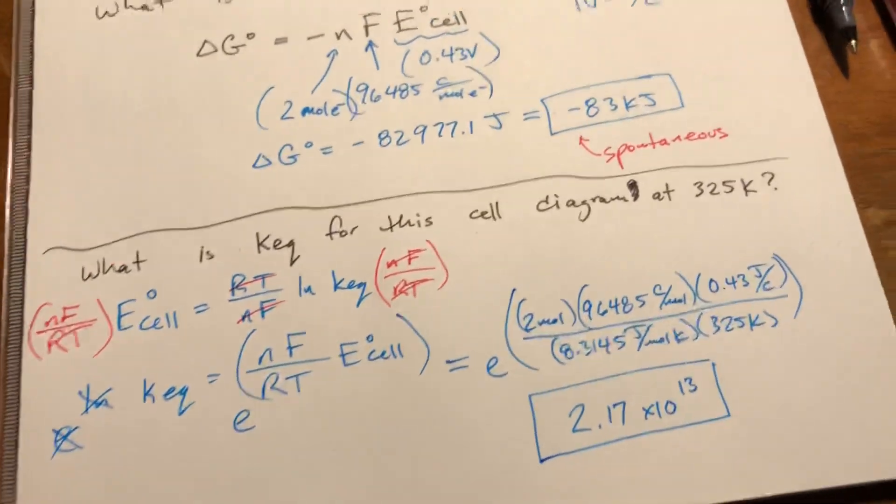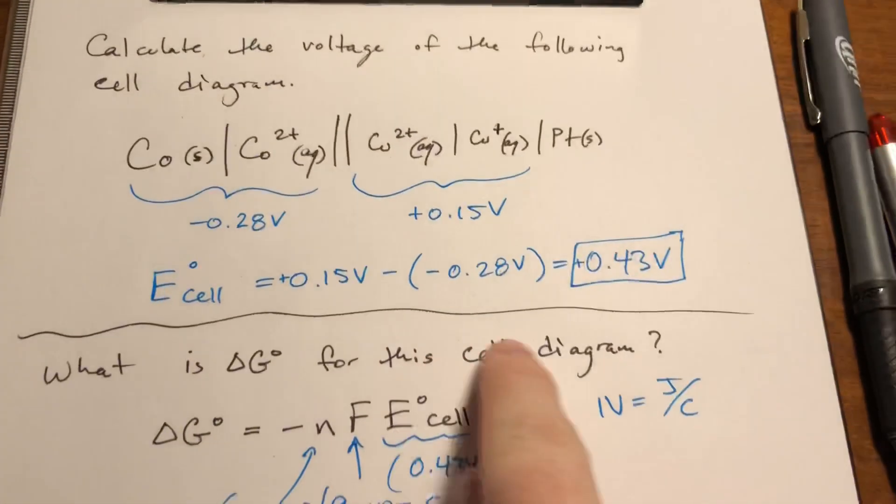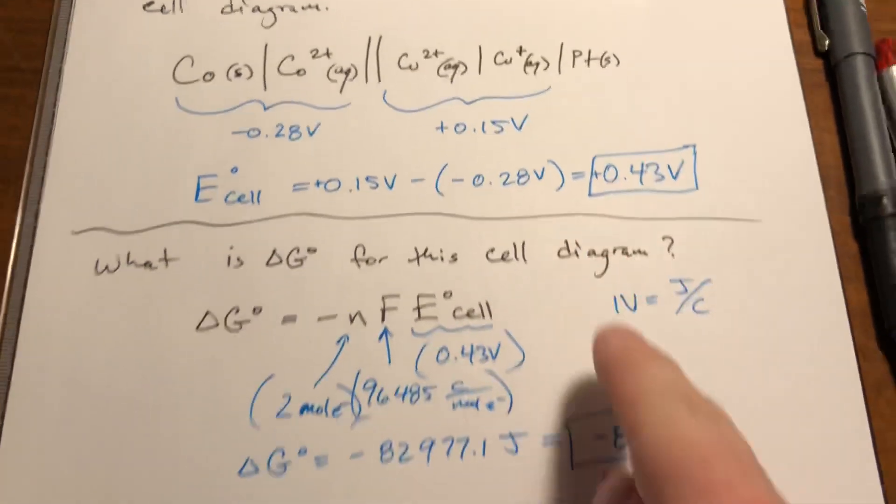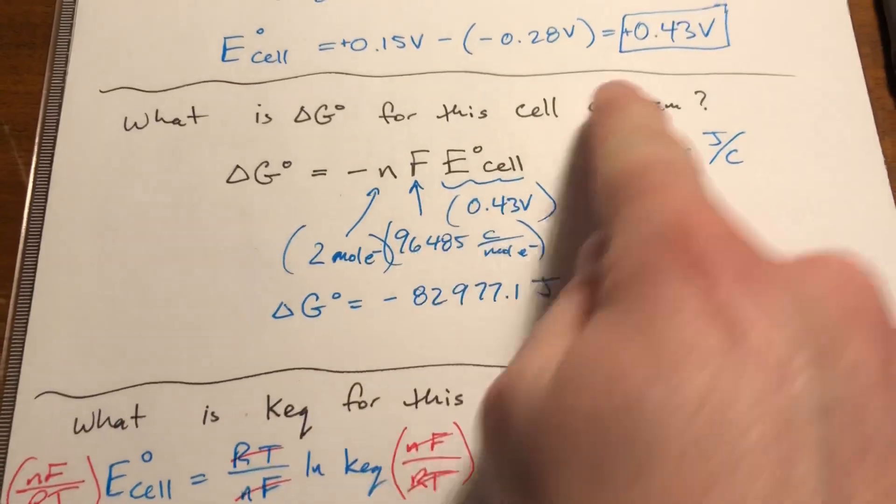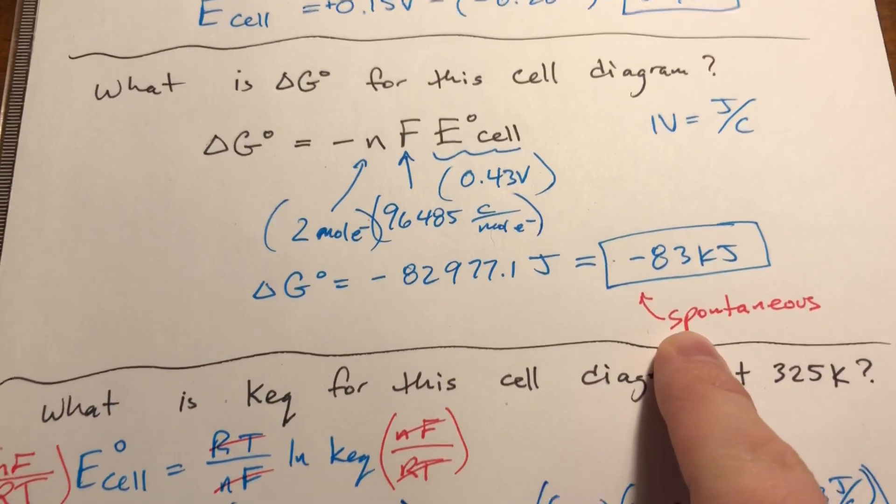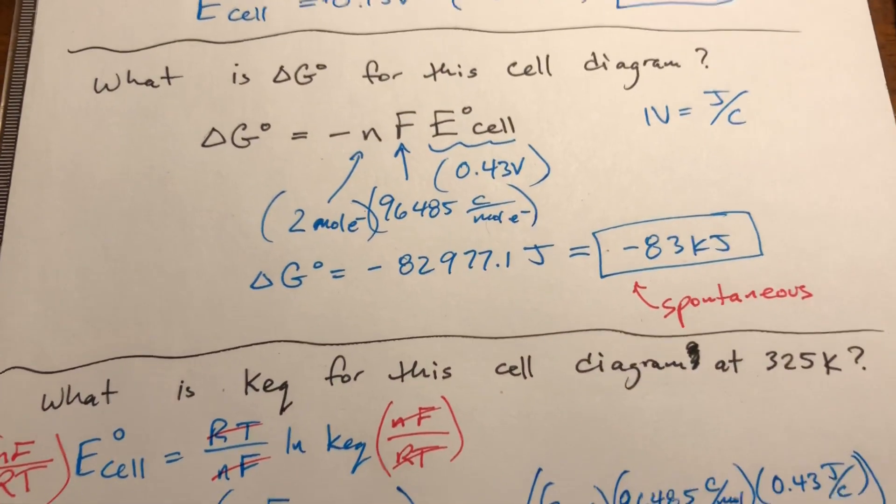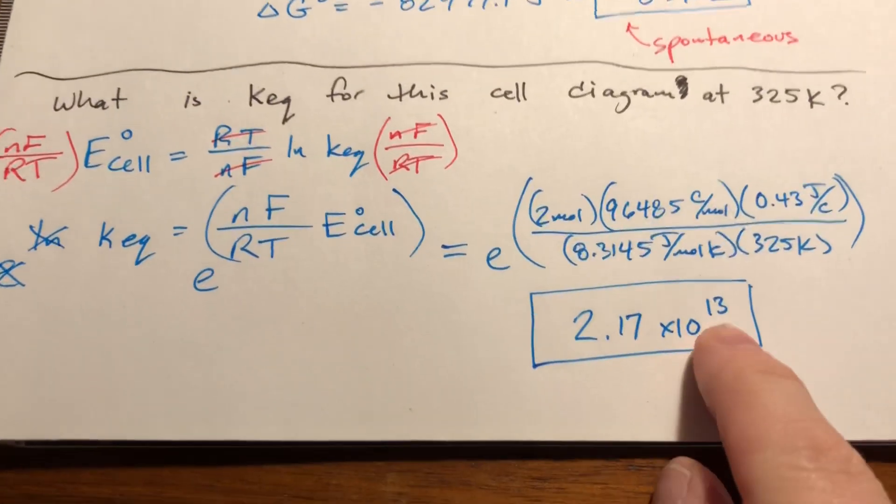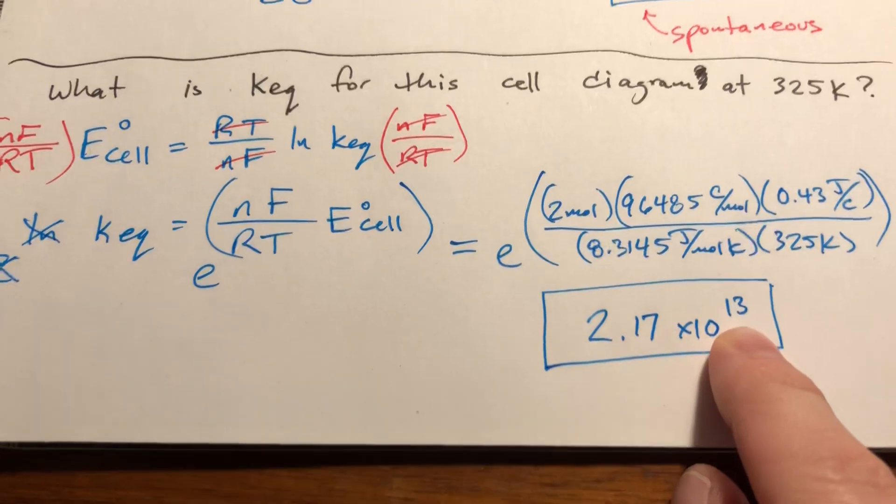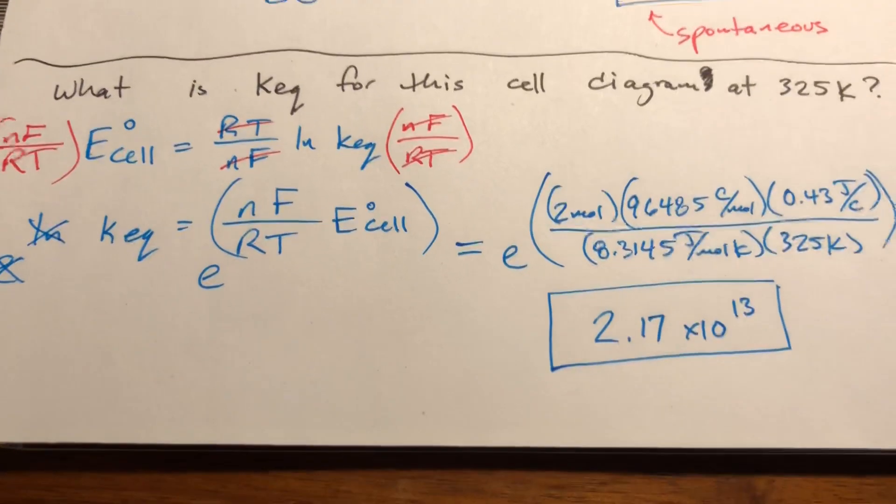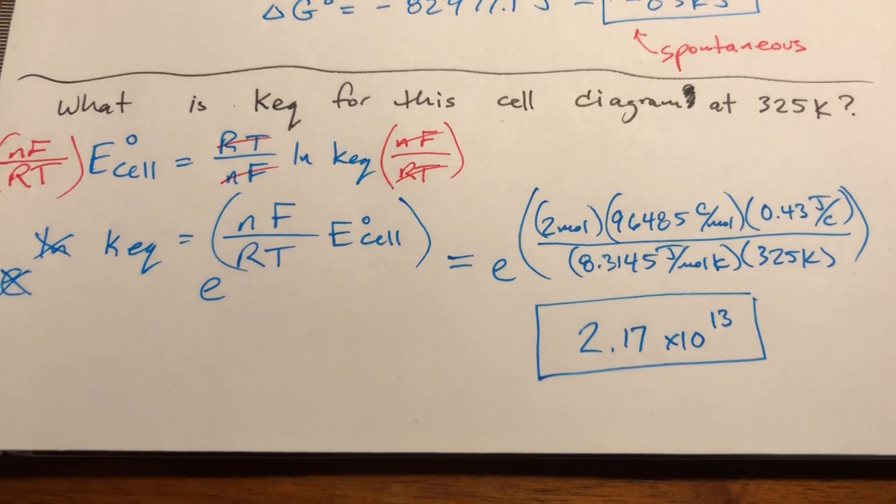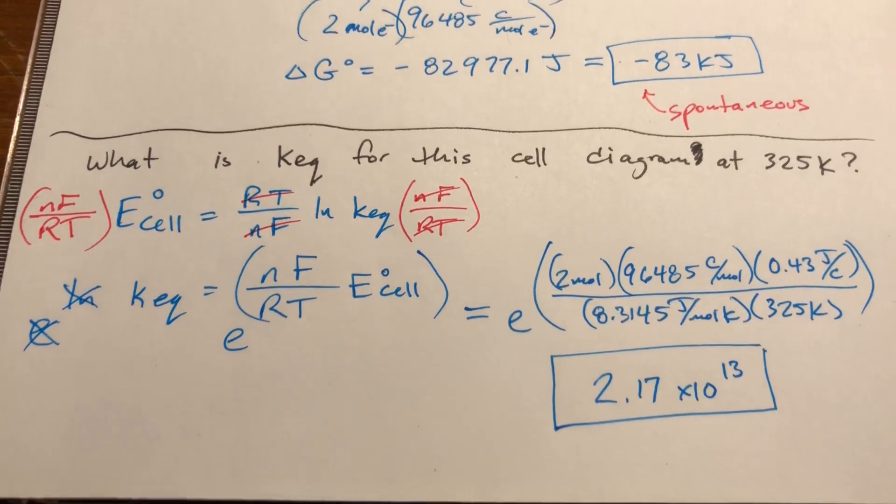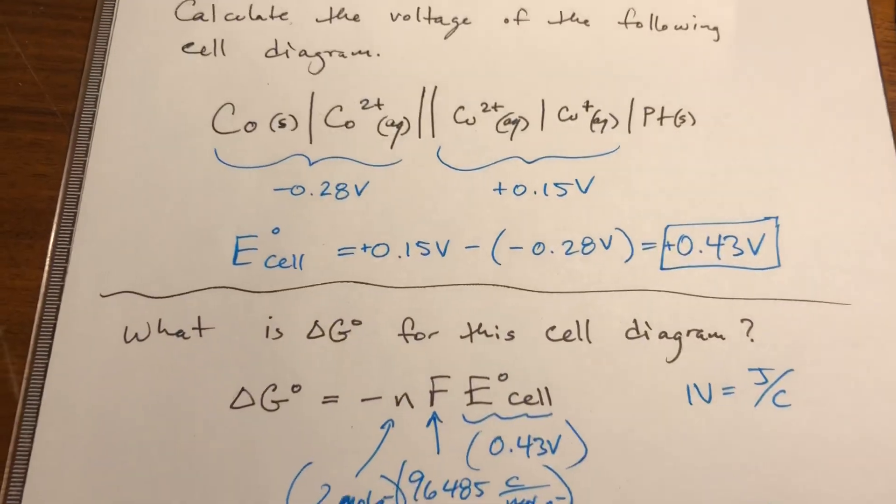So let's see if all this makes sense. We have a positive voltage, which means if we hook this all up, the battery should run and generate electricity. The delta G that we calculated is negative, which means the reaction is spontaneous, meaning that it should go in the forward direction, which is what the voltage tells us. If this was at equilibrium, we have a very large equilibrium constant, 10 to the 13th. This is essentially a 2 with 13 zeros after it. That means it's going to be very much going in the forward direction, which also goes along with it being very spontaneous and a battery that works in the forward direction.